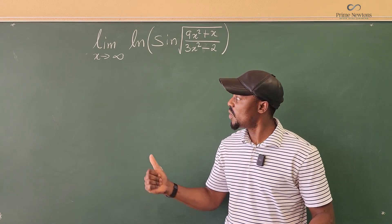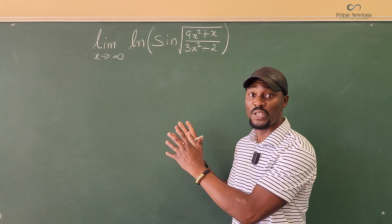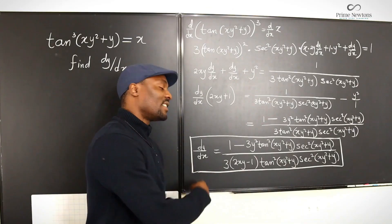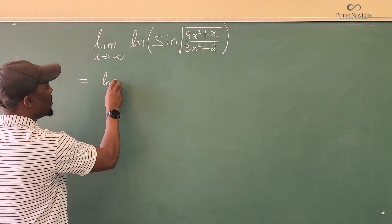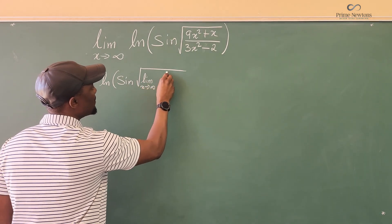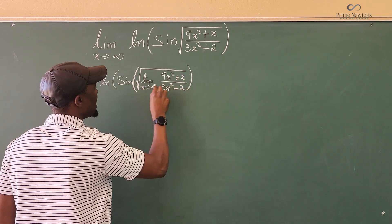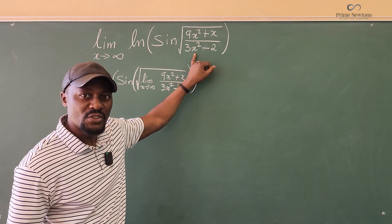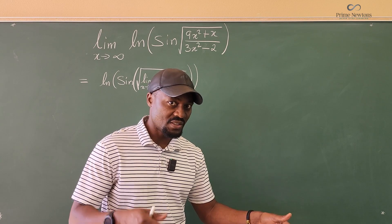When you get used to it and understand how limits work, you'll be able to do what I'm about to show you. So I'm going to say that this limit is equal to the natural log of the sine of the square root of the limit as x goes to infinity of (9x² + x) / (3x² − 2). I've moved the limit from the outside all the way to the inside.